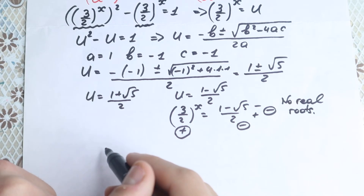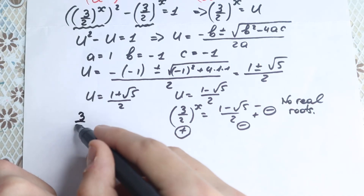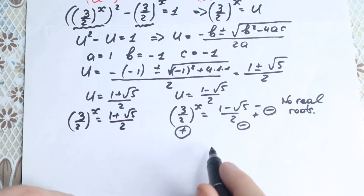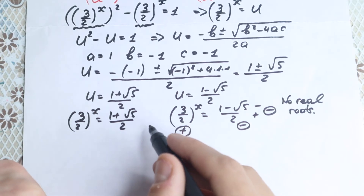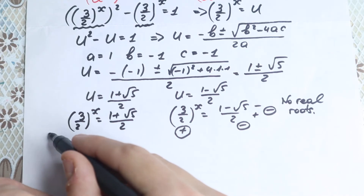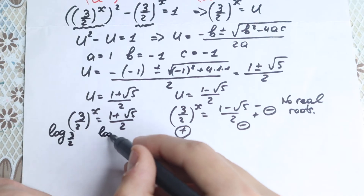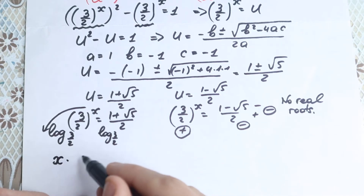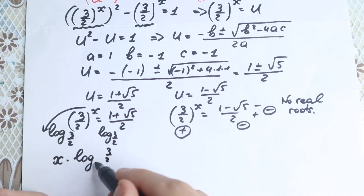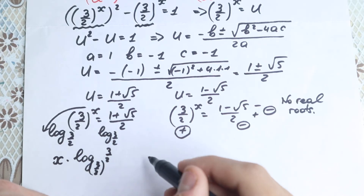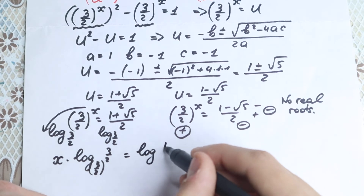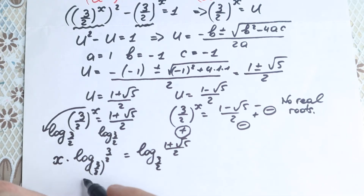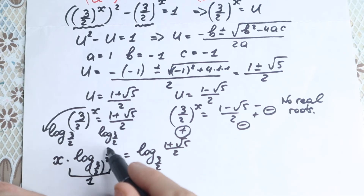Let's go to the positive case. We have 3 over 2 to the power x equal to 1 plus square root of 5 over 2. Let's take log on both sides, using base 3 over 2. Then x jumps to the front: x times log base 3 over 2 of 3 over 2, equal to log base 3 over 2 of 1 plus square root of 5 over 2. Since log base 3 over 2 of 3 over 2 equals 1, we can cancel it.